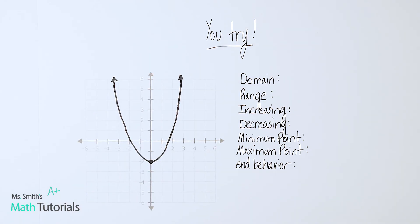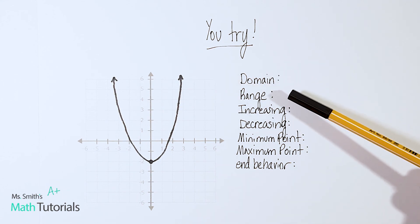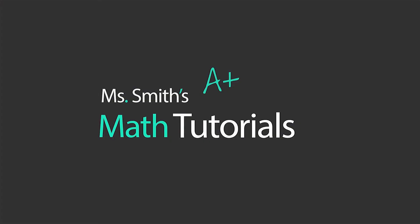Okay, you guys try this one. This is actually a parabola — a quadratic; we'll get more into those later. I want you to try: what is the domain and range? Is it increasing, and if so from where to where? Decreasing — if so, from where to where? Is there a minimum point? A maximum point? And what are those end behavior statements? I will post the answer in the description of this video.